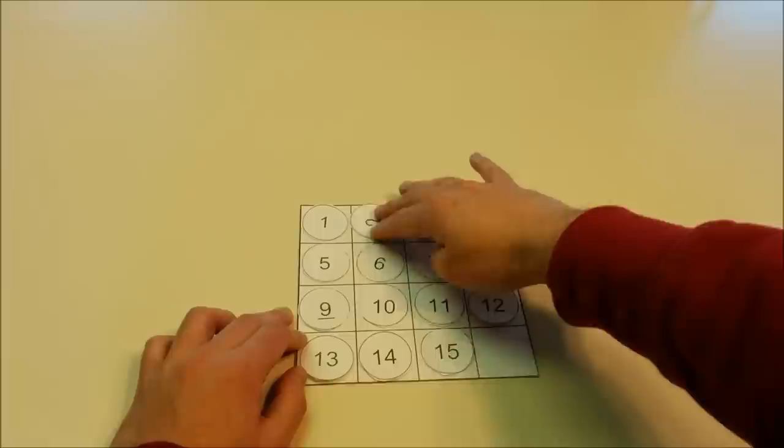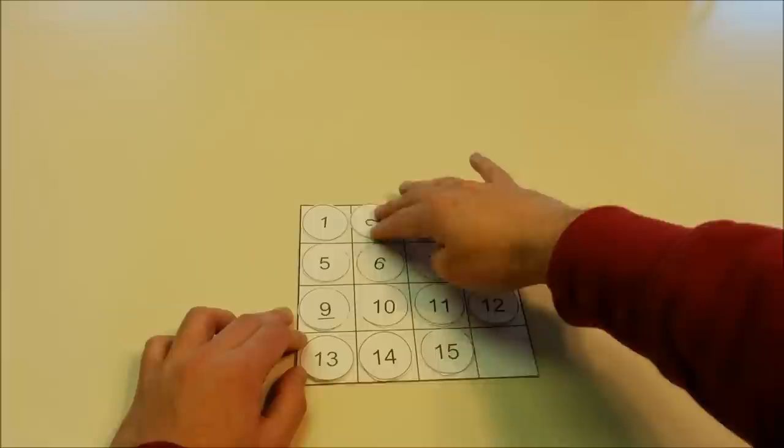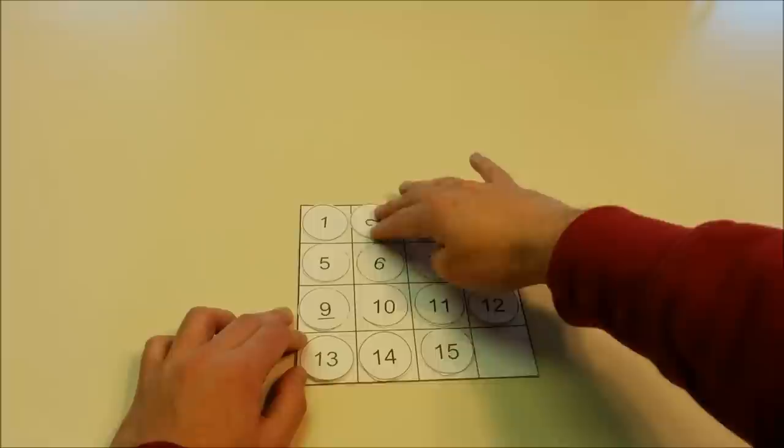And once we do that, we will have solved the puzzle and put the numbers in order, 1 through 15, by sliding the disks around inside the grid. Basically thinking inside the box.